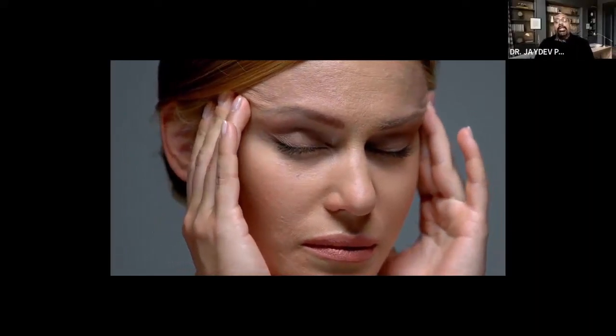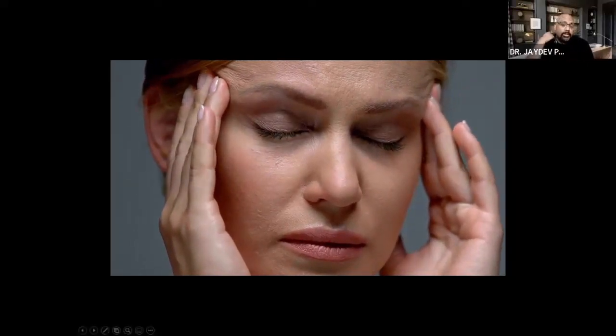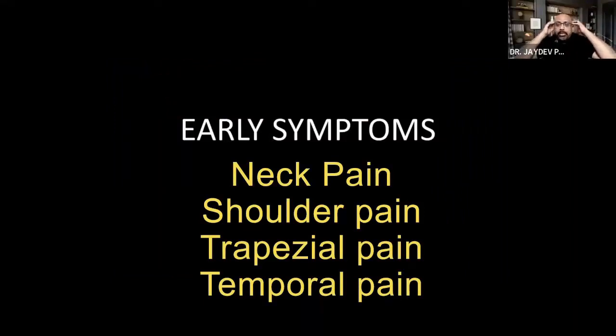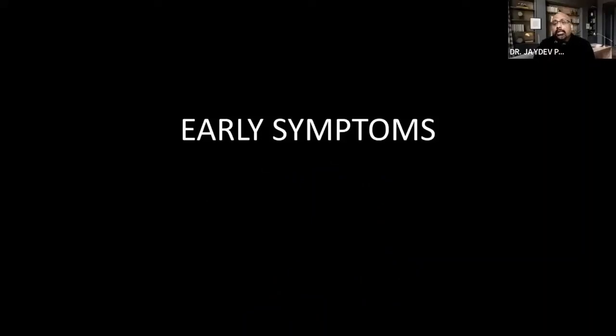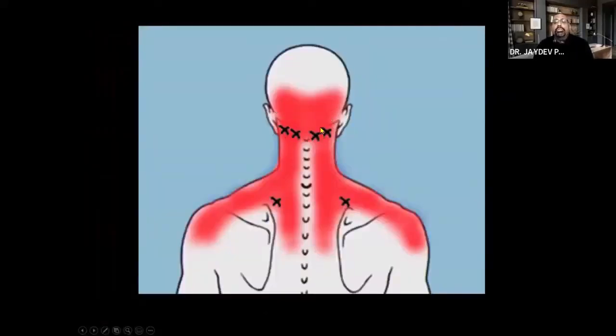The reason for this referred pain pattern is that the trigeminal ganglion descends into the spinal cord, causing overlap in pain referral. So neck pain in spondylosis can manifest as shoulder pain, trapezial pain, occipital pain, or posterior temporal pain. When muscle spasm recurs repeatedly, the muscle attachment points become trigger points, causing extremely debilitating pain. These are the common tender points in cervical spondylosis.